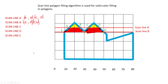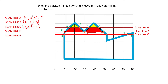The next scanline is scanline C. We have four intersection points: h, i, j, and k. Point i is a vertex. Check the edges connected to it — this edge and this edge are on opposite sides of scanline C, one on top and one on the bottom. When connected edges are on opposite sides, count the intersection as only one point. So we write i once, make pair h,i and pair j,k, and fill in the area between h,i and j,k.